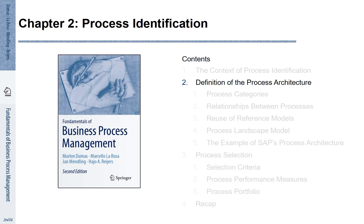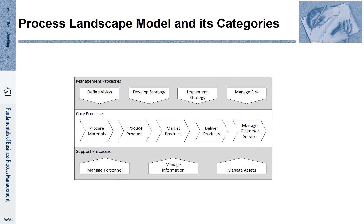Chapter 2, Section 2: How can we define a process architecture? Before we look at the different elements of a process architecture, let's first look at its most abstract view — the so-called process landscape model.